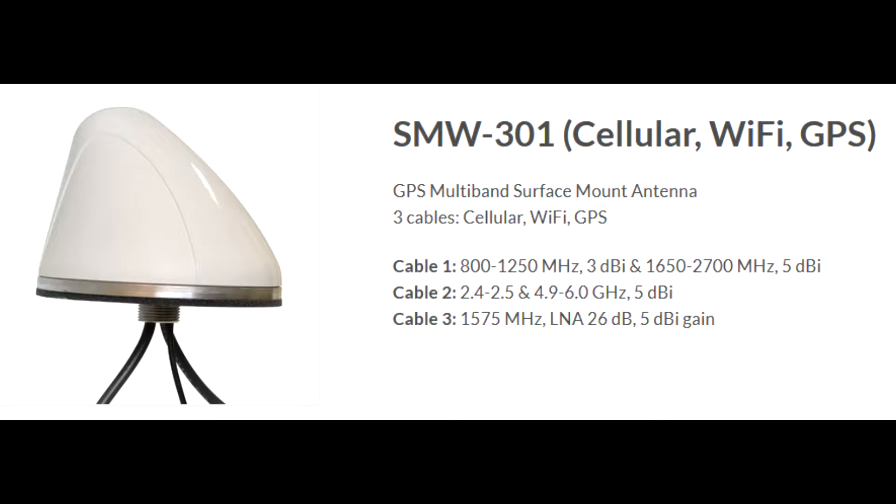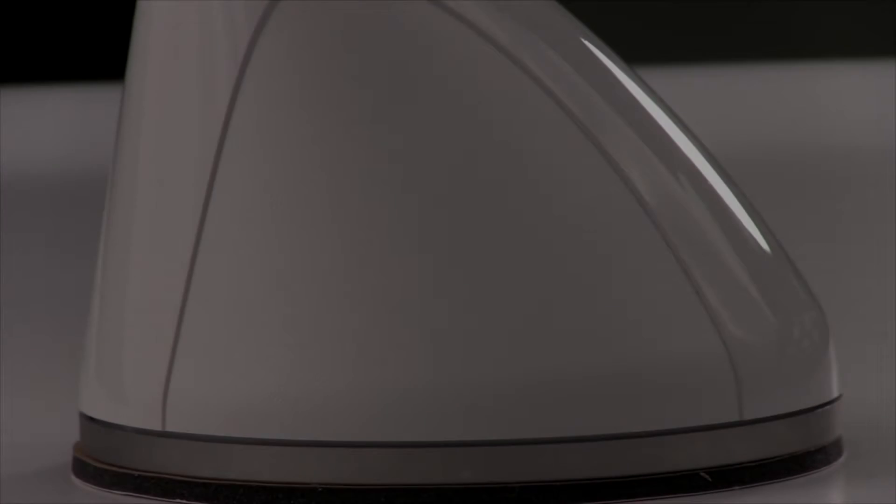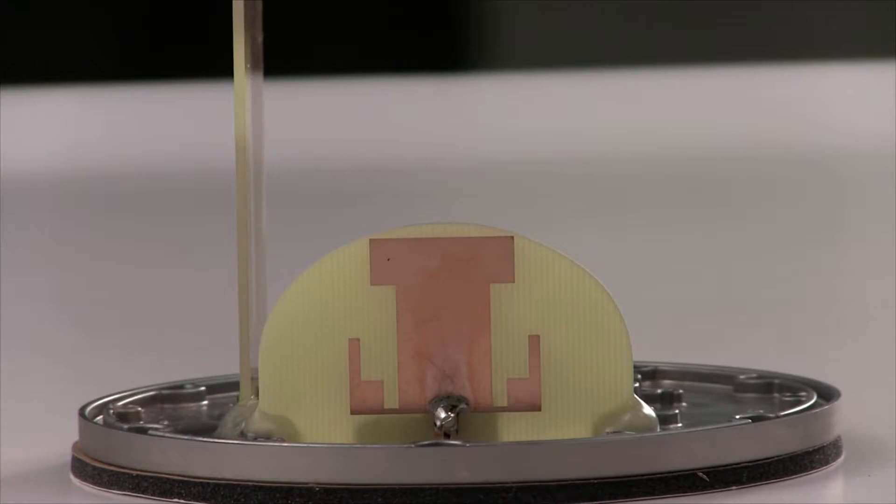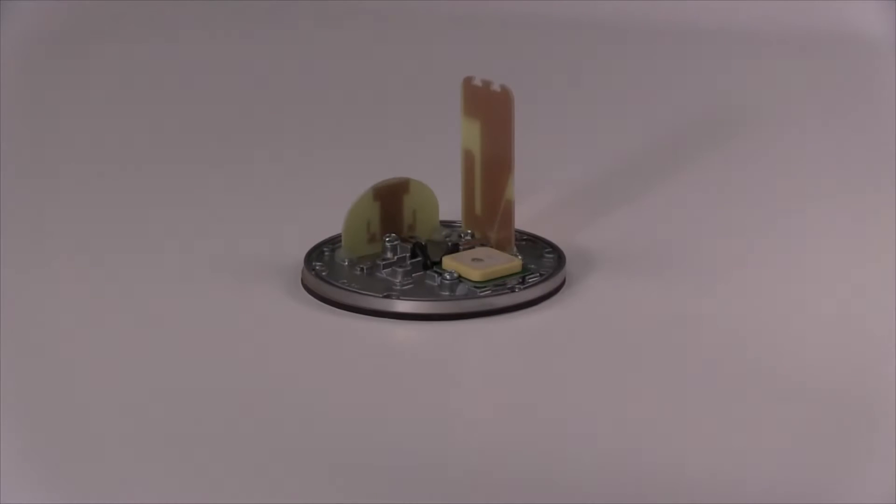This antenna combines GPS, cellular, and Wi-Fi technologies. Housed within the radome of the SMW-301 are three separate antenna elements, one each for GPS, cellular, and Wi-Fi frequencies.